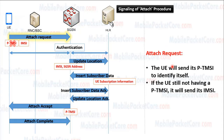Now let's start the procedure. Let's assume that this is the first time the UE attaches to the network. First, the UE sends an attach request to the SGSN. Because this is the first time the UE attaches to the network, the UE is still not having a PTEMC assigned to it. Therefore, it will identify itself in this message by sending the IMSI.